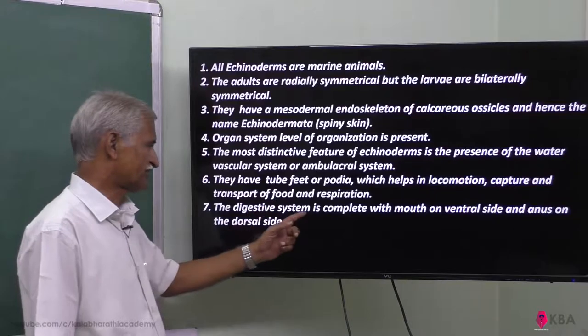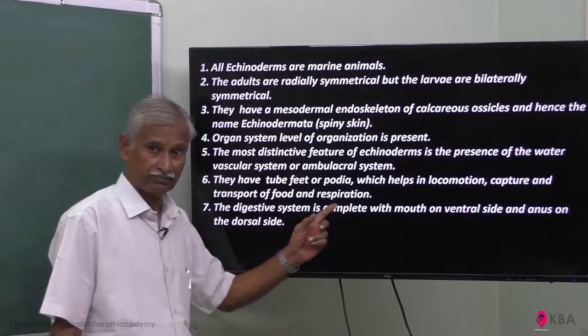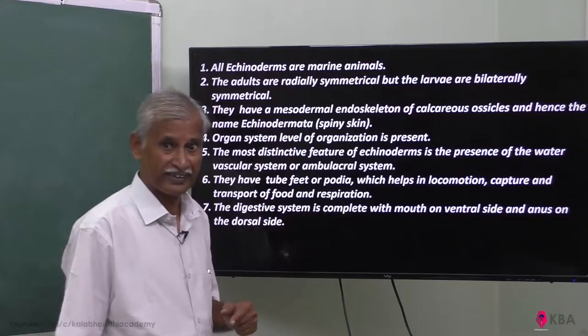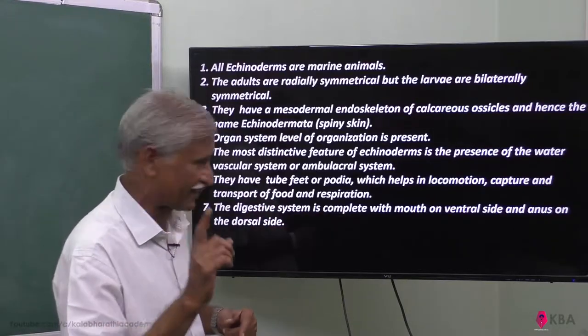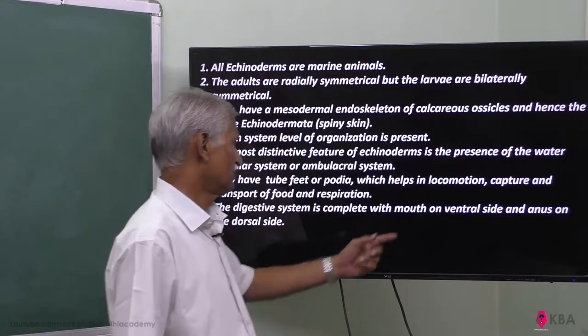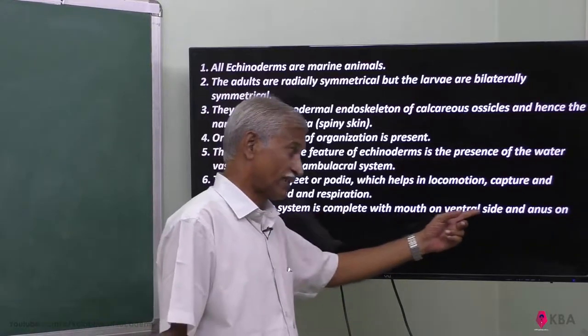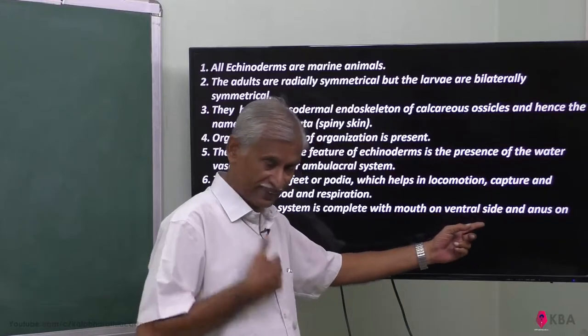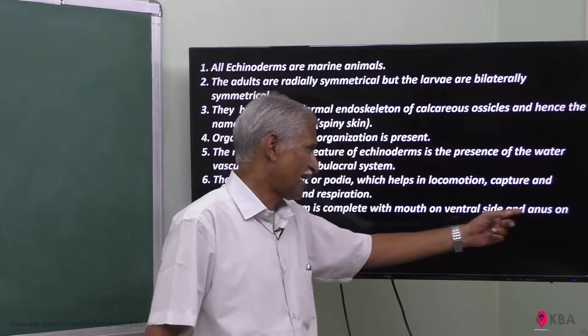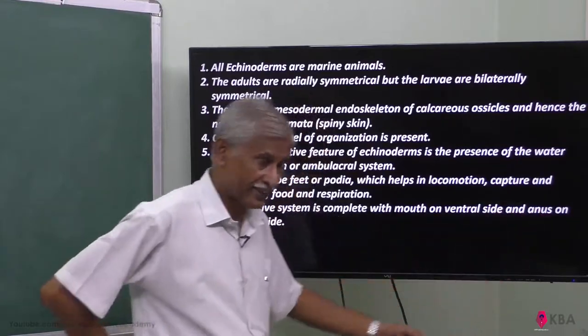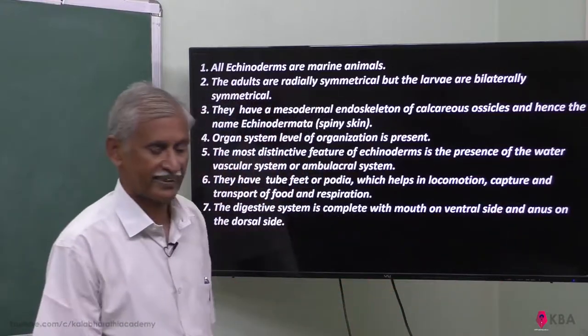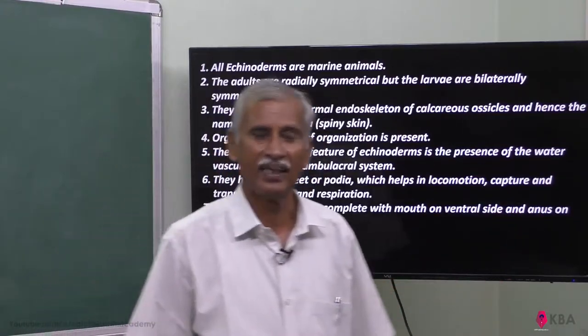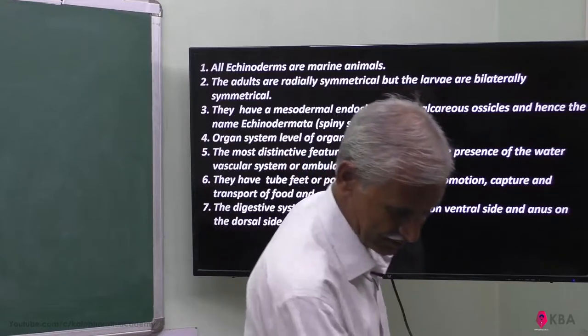The digestive system is complete, meaning it has both a mouth and anus. The mouth is on the ventral side and the anus is on the dorsal side.